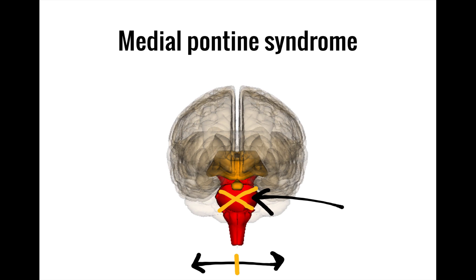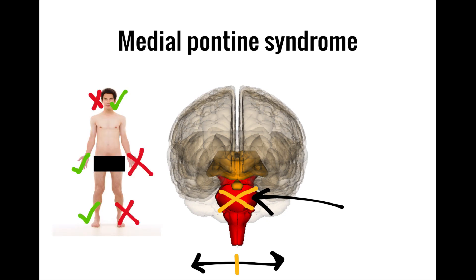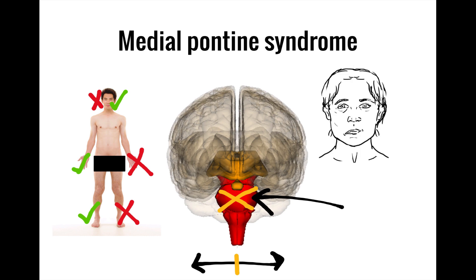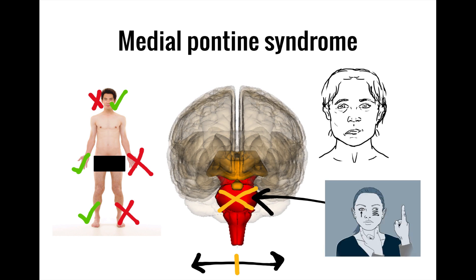Just as lateral pontine syndrome is very similar to lateral medullary syndrome, so too is medial pontine syndrome similar to medial medullary syndrome, with crossed findings and motor involvement. The main distinction has to do with the cranial nerves involved. The motor component of cranial nerves five through eight involves facial muscles and extraocular eye movements, so medial pontine syndrome can lead to facial asymmetry and horizontal gaze palsy. There's also another medial structure in the pons not present in the medulla — the medial longitudinal fasciculus — meaning medial pontine syndrome can produce internuclear ophthalmoplegia.